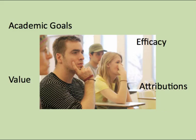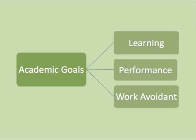Researchers explain academic motivation in terms of four major factors: students' academic goals, their self-efficacy — that is, their beliefs about their ability to succeed — value, that is, the value attached to their goals, and attributions, their beliefs about what causes their successes and failures. Let's start with academic goals. Academic goals are important because they organize and focus students' effort.